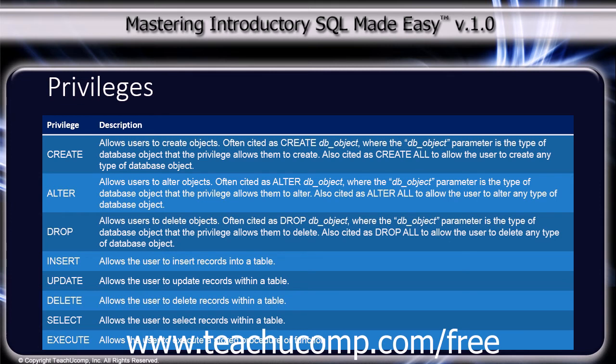The insert privilege allows the user to insert records into a table. The update privilege allows the user to update records within a table. The delete privilege allows the user to delete records within a table. The select privilege allows the user to select records within a table. And the execute privilege allows a user to execute a stored procedure or function within the database.